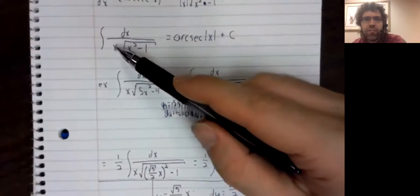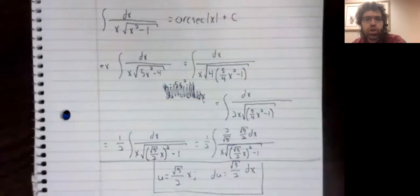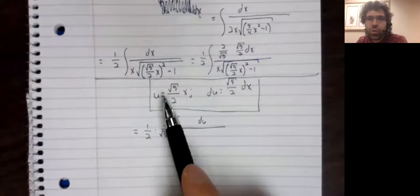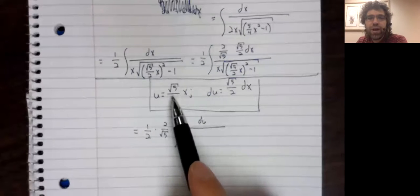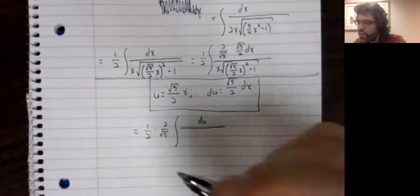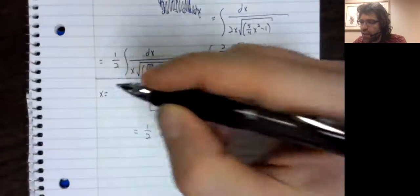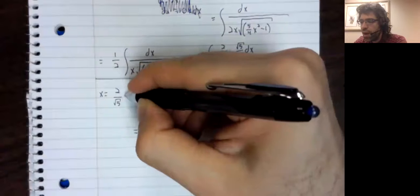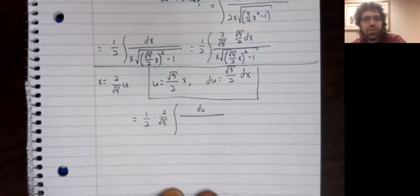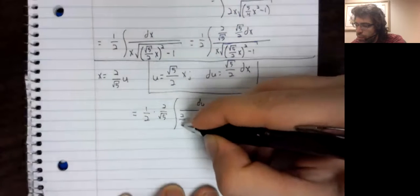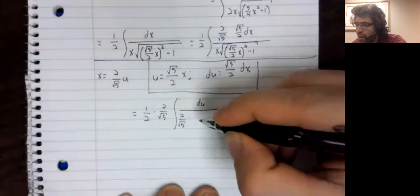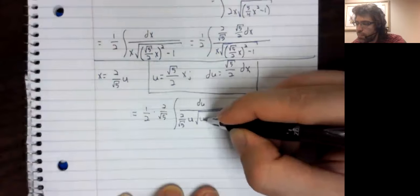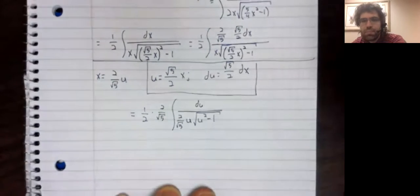I mean, if you look at this form together, these variables match. That is not fatally difficult. If u equals the square root of 5 divided by 2 times x, then x equals 2 over the square root of 5 times u. And we have 2 over the square root of 5 times u, times the square root of u squared minus 1.